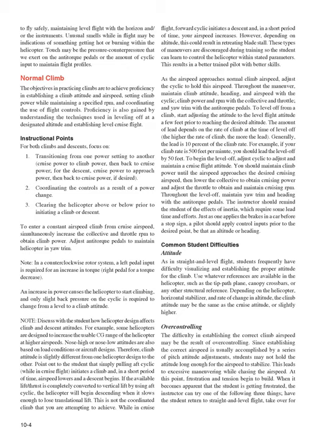As the airspeed approaches normal climb airspeed, adjust the cyclic to hold this airspeed. Throughout the maneuver, maintain climb attitude, heading, and airspeed with the cyclic; climb power and RPM with the collective and throttle; and yaw trim with the anti-torque pedals. To level off from a climb, start adjusting the attitude to the level flight attitude a few feet prior to reaching the desired altitude. The amount of lead depends on the rate of climb — the higher the rate of climb, the more the lead. Generally, the lead is 10% of the climb rate.